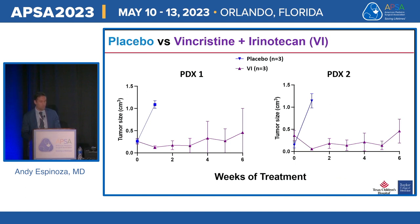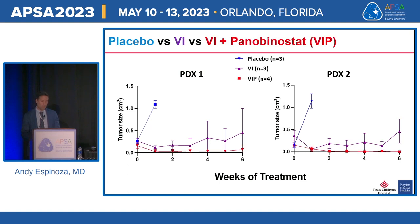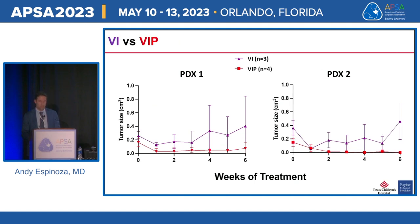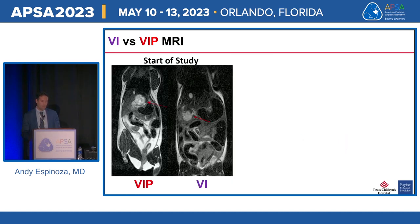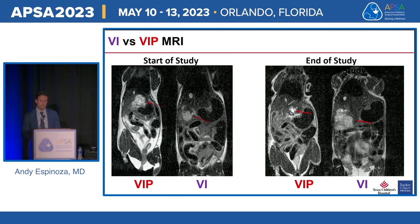Placebo-treated mice reached approximately 1 cm³ in volume within one week in both PDX models. The vincristine plus irinotecan combination showed initial tumor decrease that later increased weekly until six weeks. In contrast, VIP-treated tumors showed a decrease in tumor size that was maintained throughout six weeks. MRI imaging at the start versus end of study clearly demonstrated significant size reduction in VIP-treated tumors compared to significant increase in the VI-treated mice.